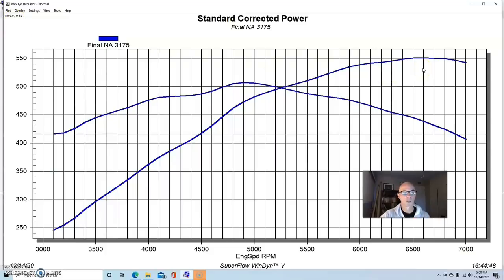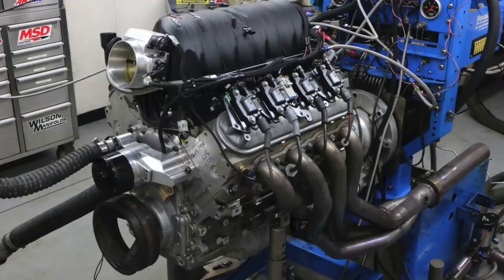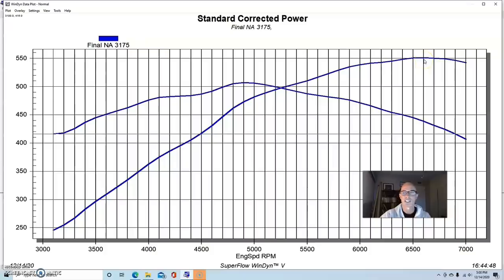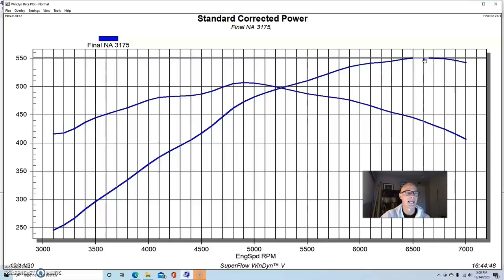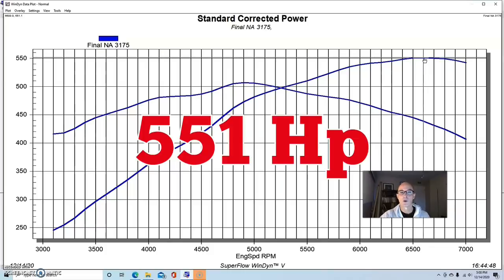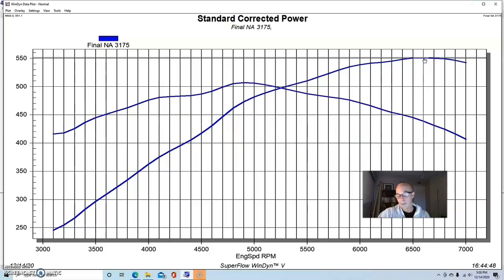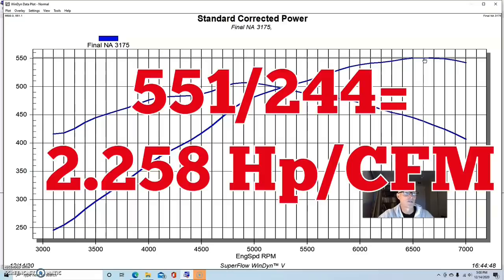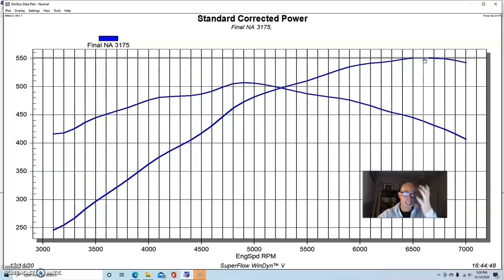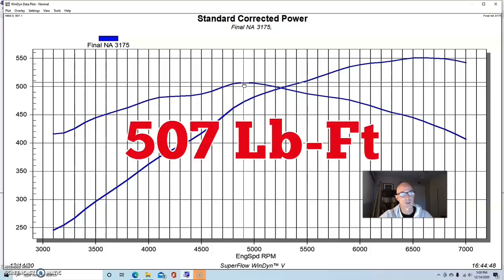LS3, basically crate motor, with a set of 317 heads, the fast 102 millimeter throttle body, inch and seven eighths headers. When we ran this thing NA, it made 551 horsepower. So it did fairly well. That's a pretty good power output. If you do the multiplication for 244 cfm and you multiply that out or divide that by 551, you'll see how much power we made per cfm. And that's always a fairly good indication. This thing made 507 foot pounds of torque.